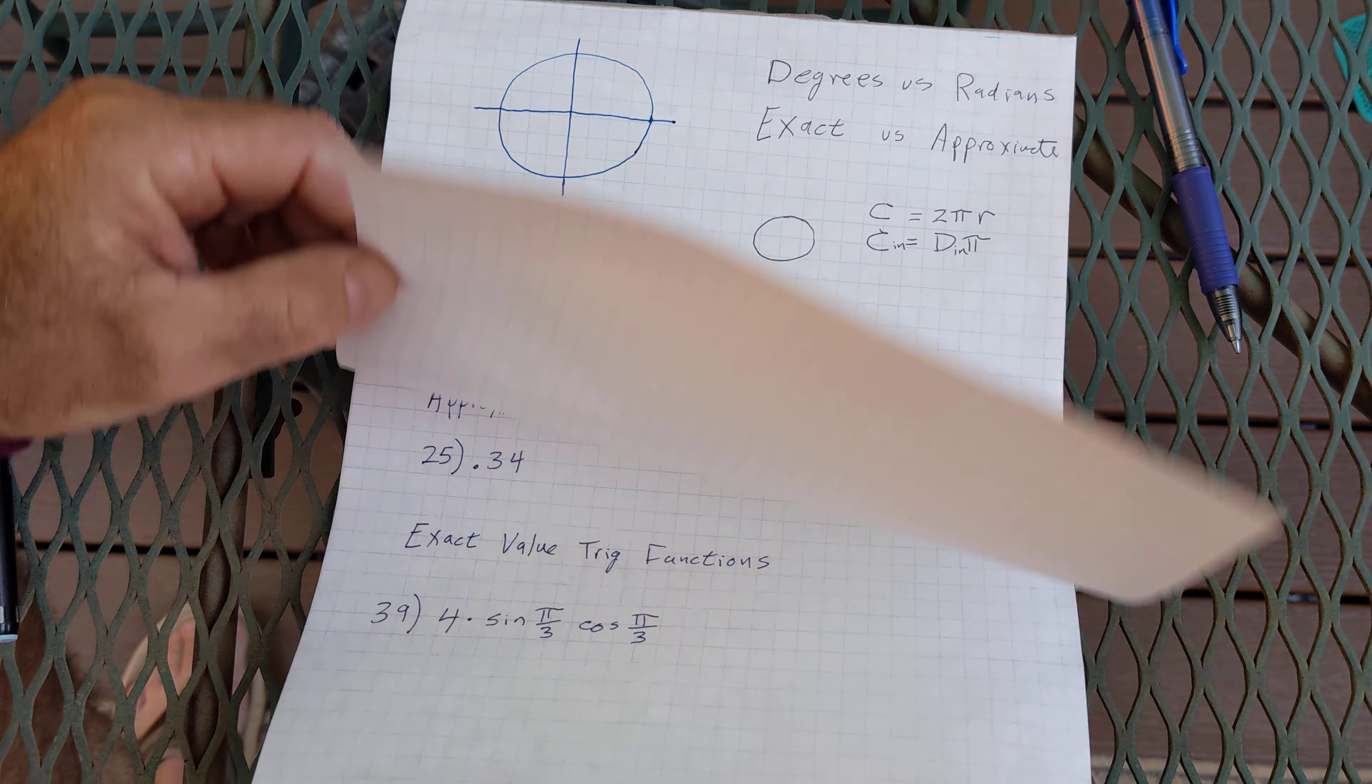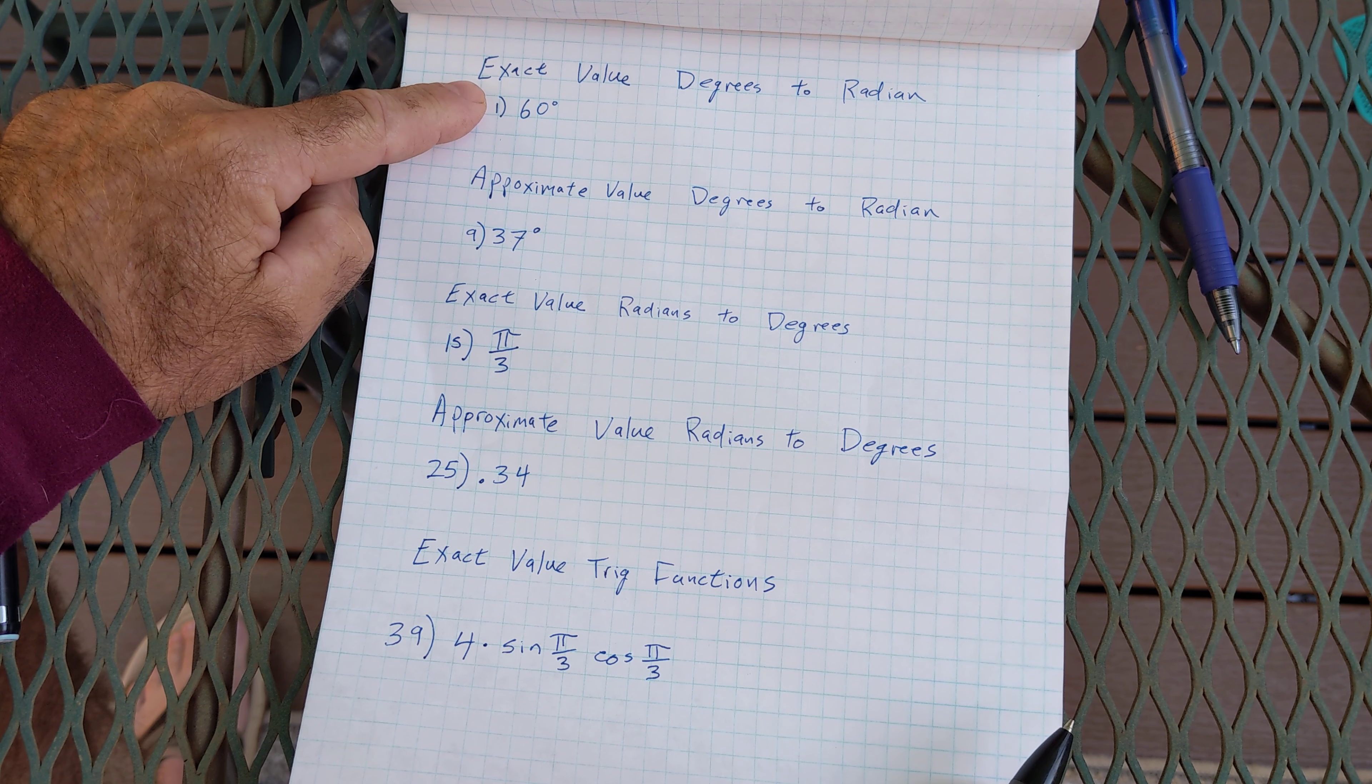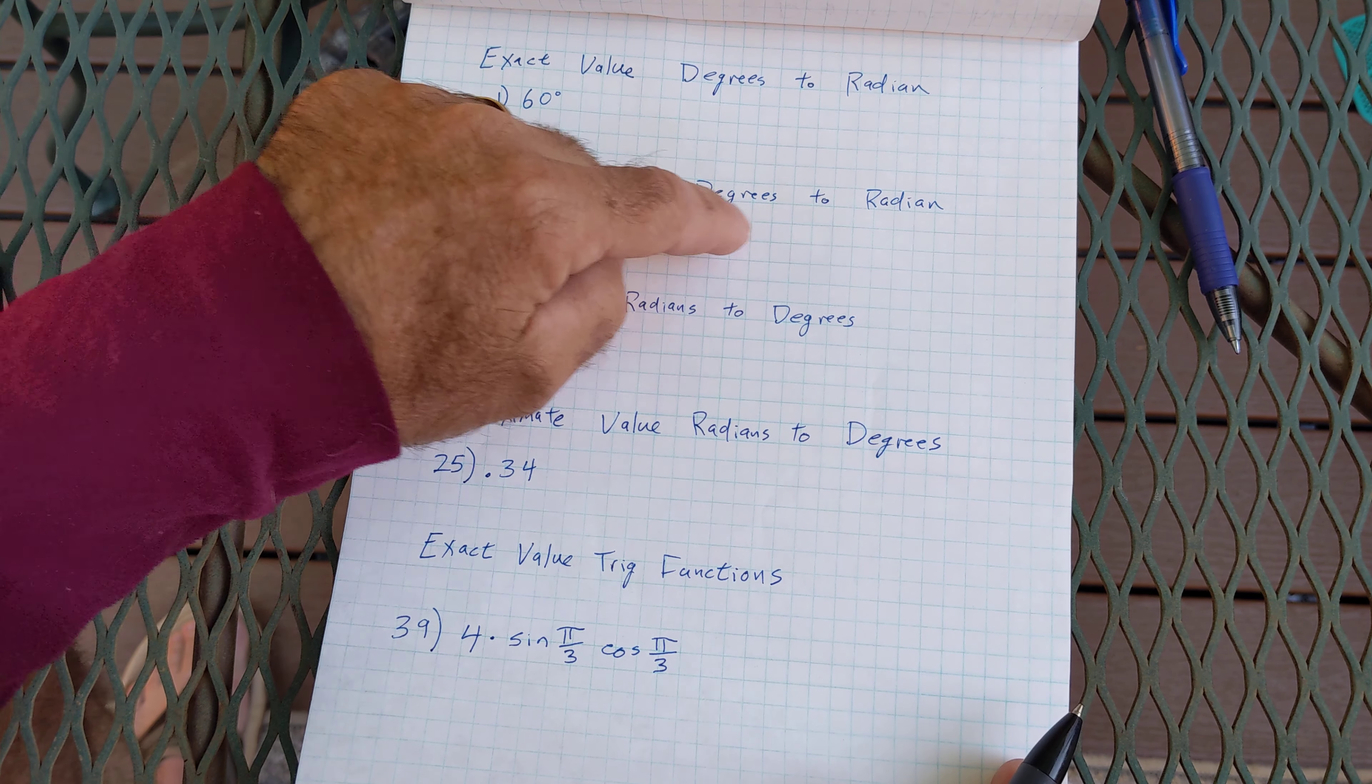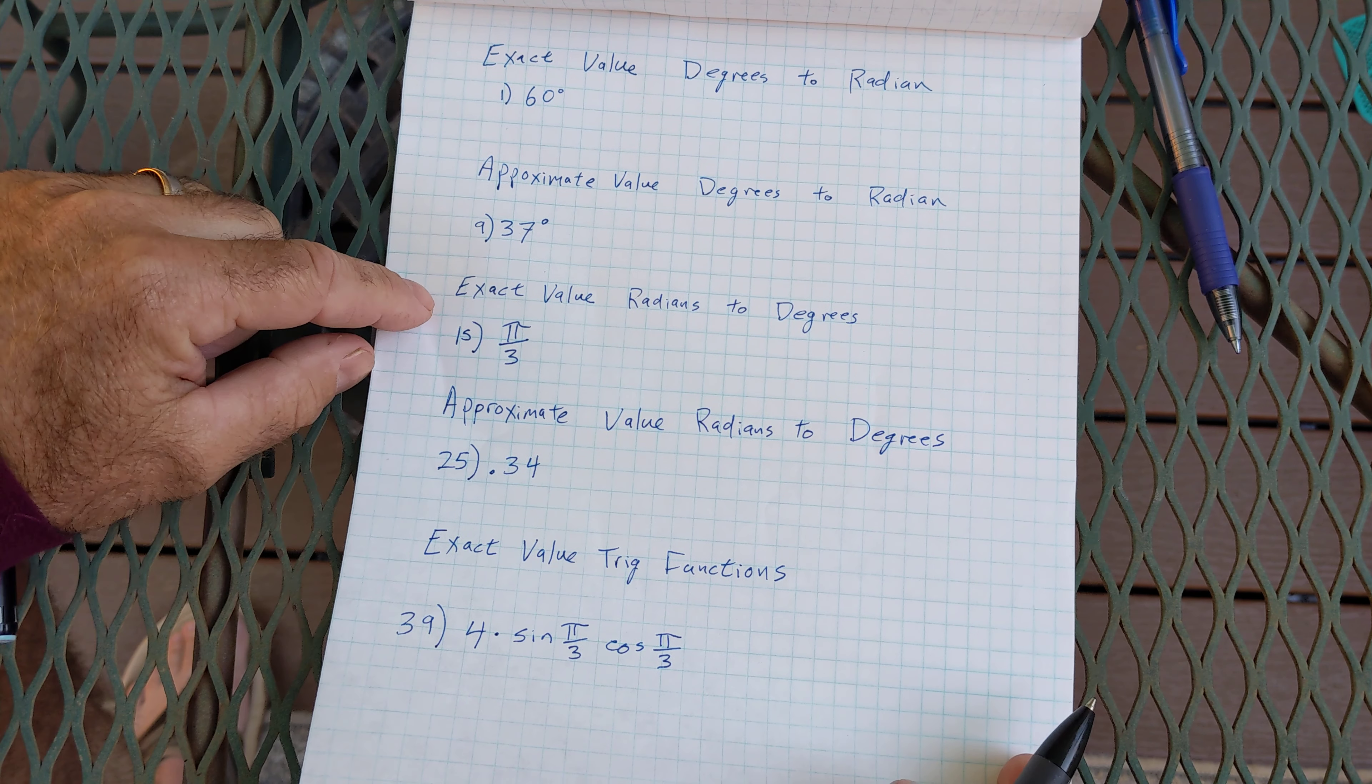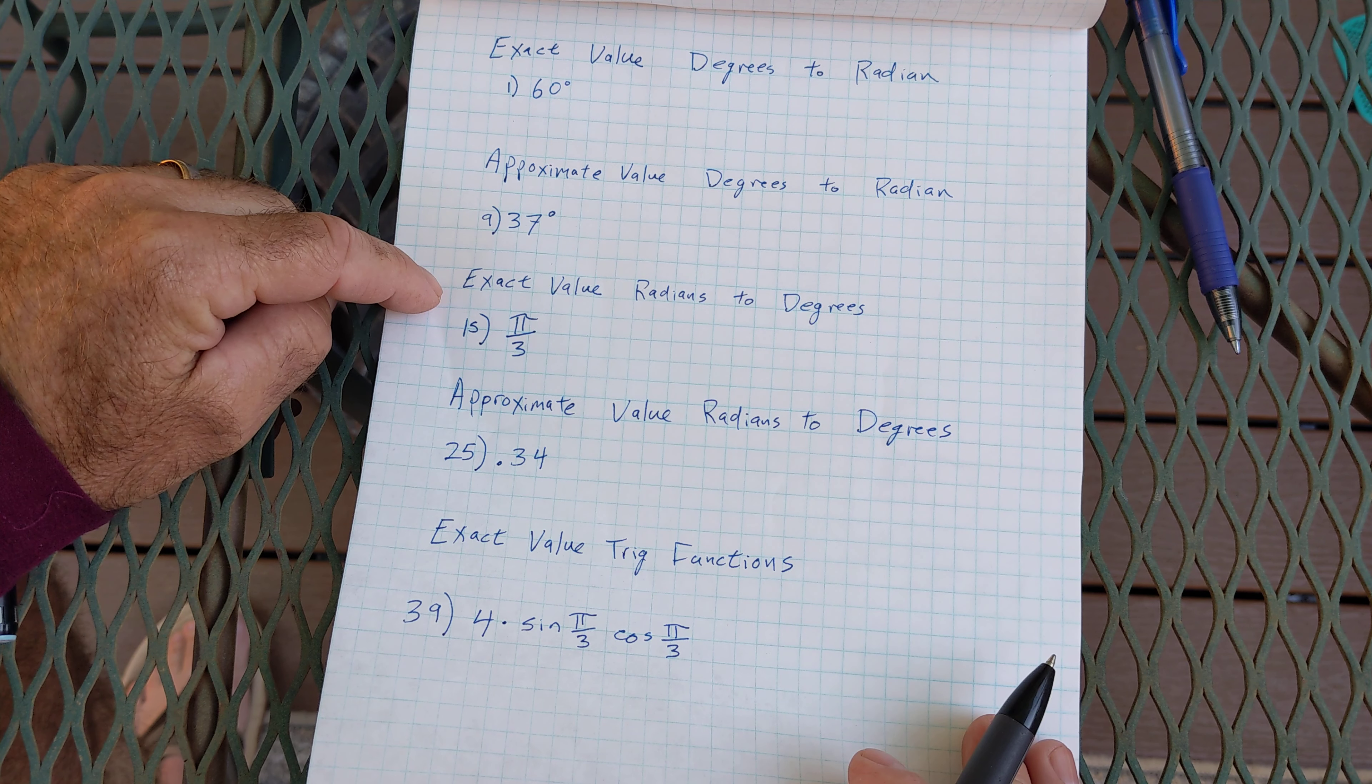One of those style of problems is convert degrees to radians as an exact value. The second style of problem is approximate value degrees to radians. The third style of value will be convert radians to degrees as an exact value.